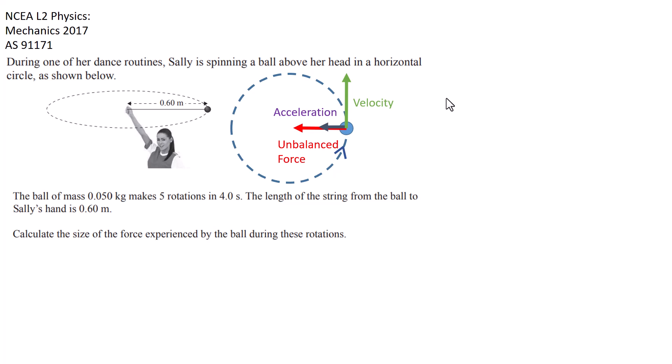At any instant, if you take that unbalanced force away, then the object will continue in its velocity at that instant. In this case the ball would move in the direction of the green arrow away from Sally, and it would continue in that velocity until it experienced an unbalanced force.